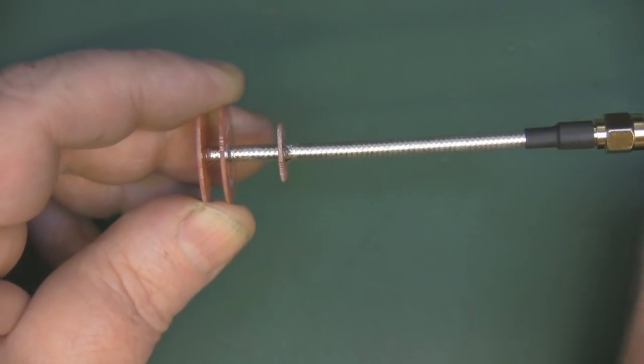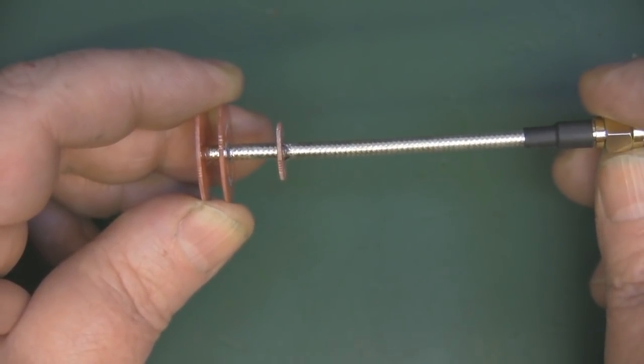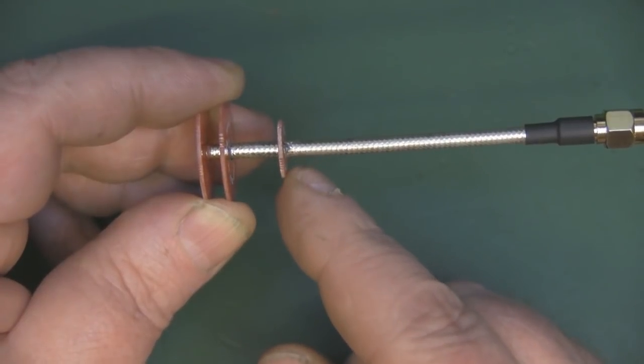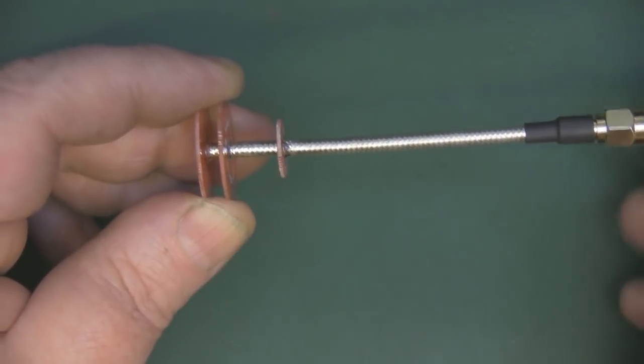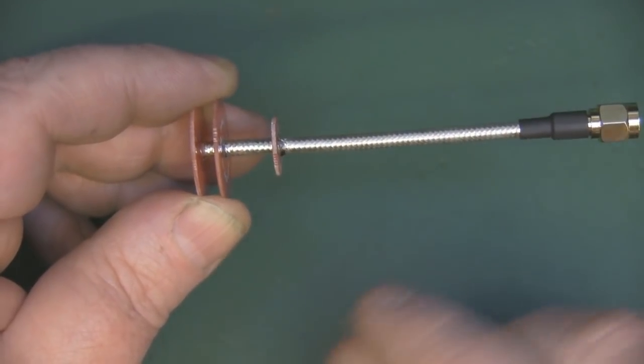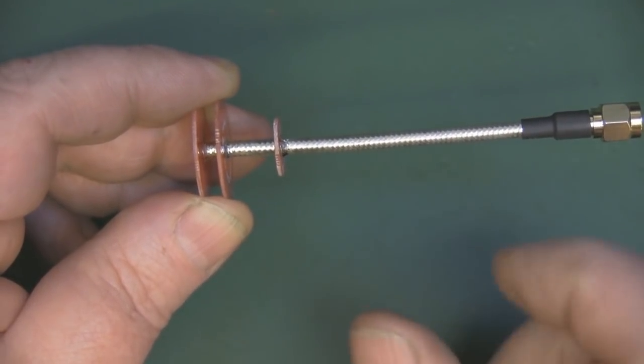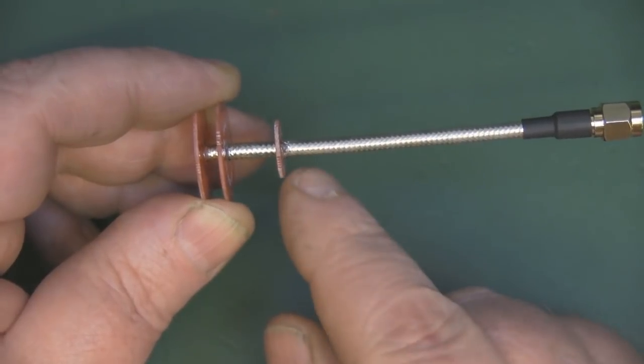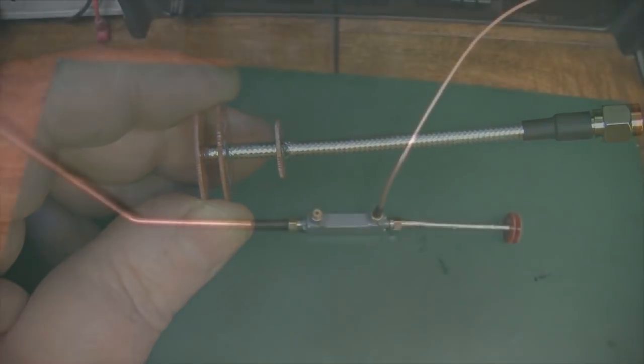So what I'll do first is desolder the SMA here and then desolder this circular part, put the SMA back on, and give it another test on the spectrum analyzer. Then we can compare the output and see if it makes it much worse when we remove this circular piece.